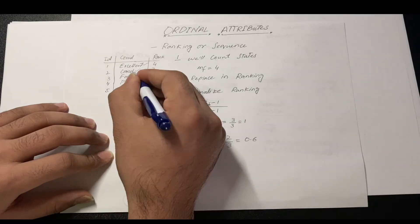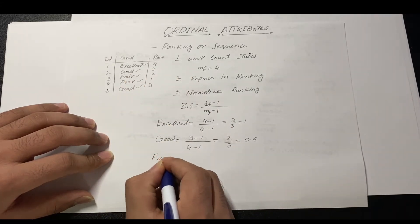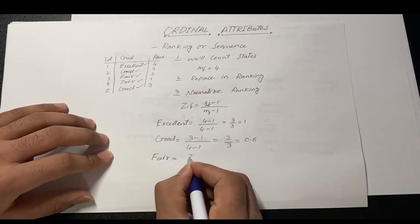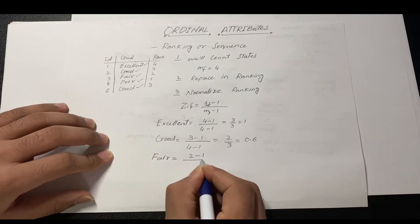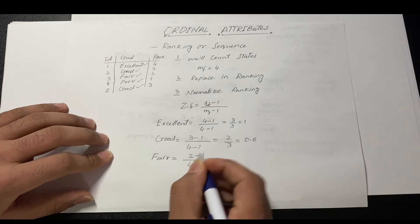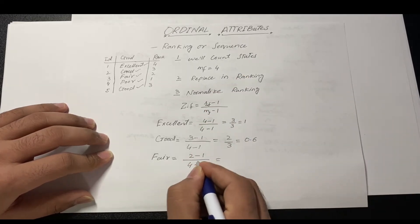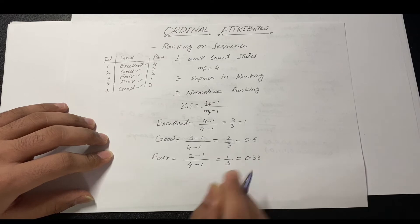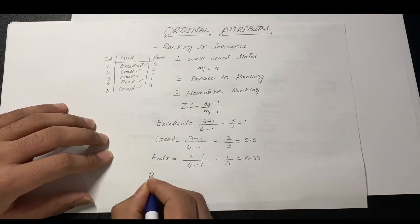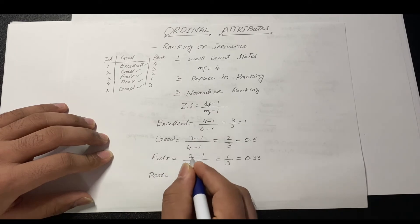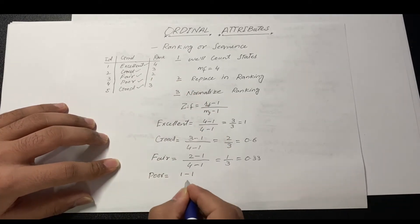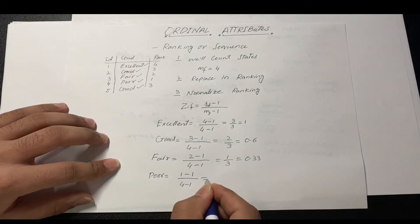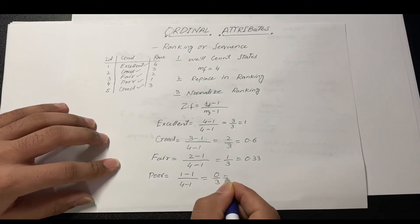For fair, rf is two: (2 - 1) / (4 - 1) = 1/3 = 0.33. For poor, rf is one: (1 - 1) / (4 - 1) = 0/3 = 0. So we have now normalized all the rankings.